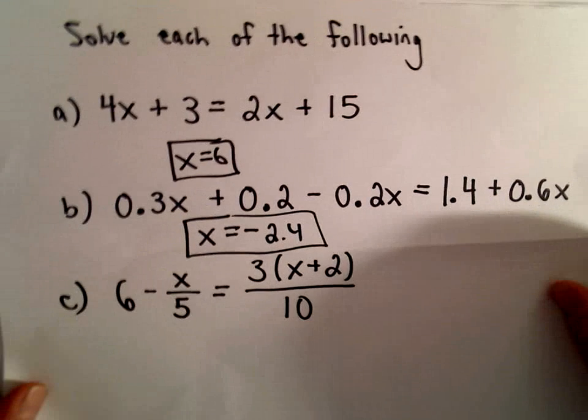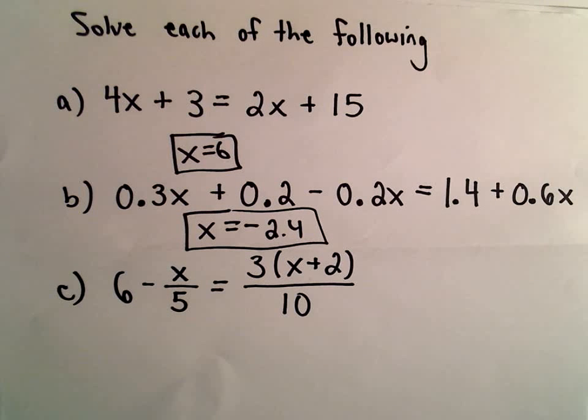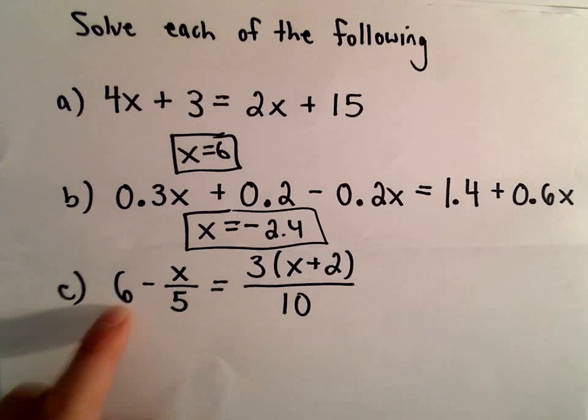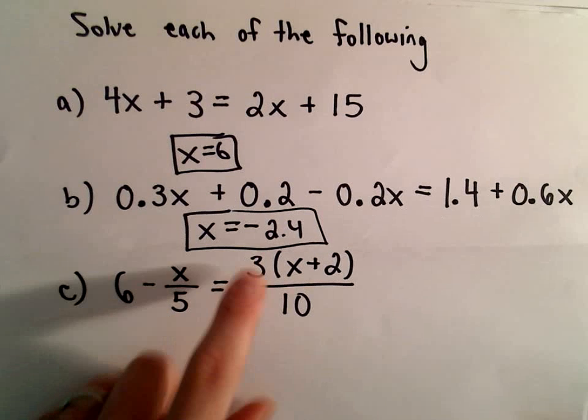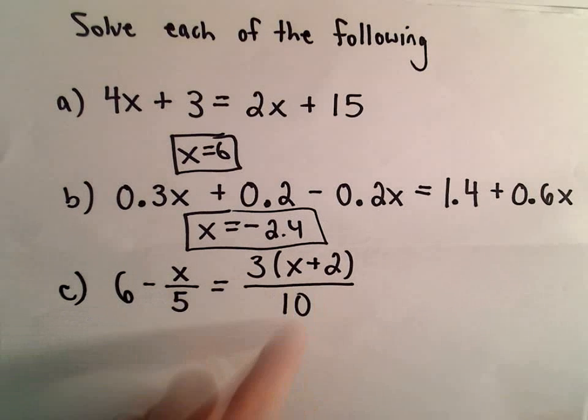Okay, here we're going to solve one last equation where we have variables on both sides. Here we're going to solve 6 minus x over 5 equals 3 times the quantity x plus 2 over 10.